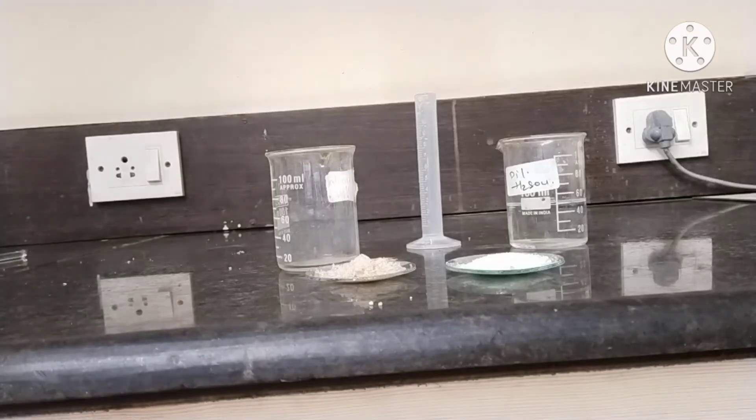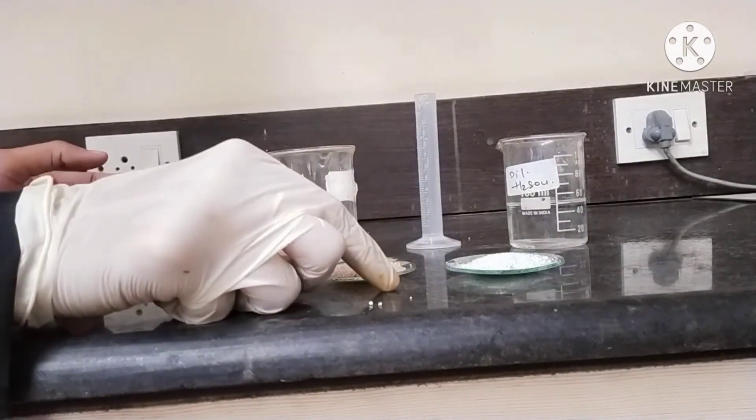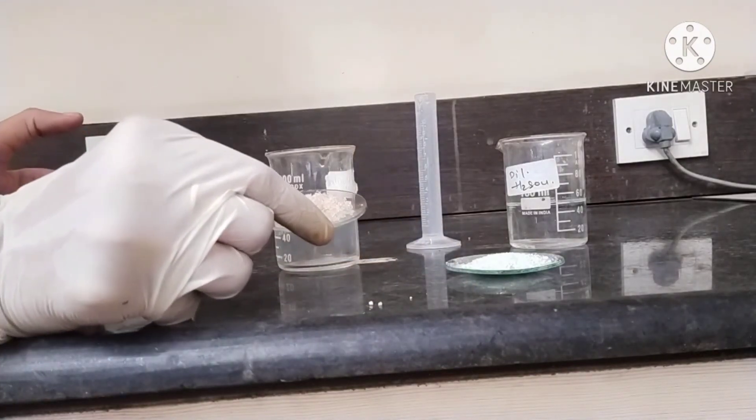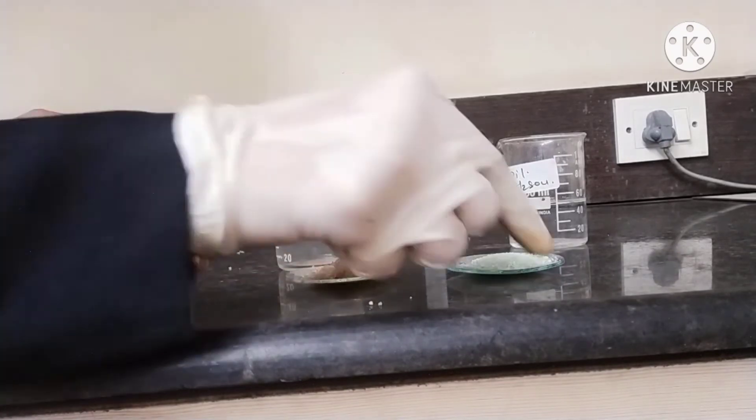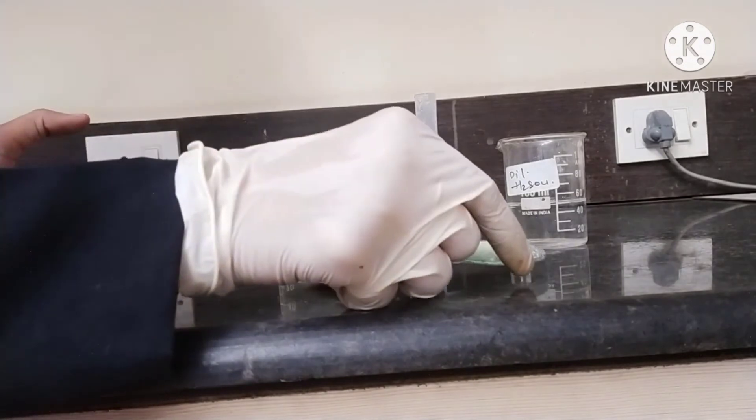Let's start the procedure. First, we have to take two watch glasses, then add 1.5 grams of ammonium sulphate and 3.5 grams of ferrous sulphate, which I already weighed in.